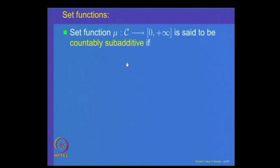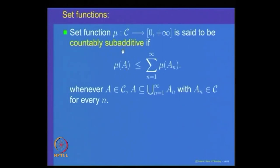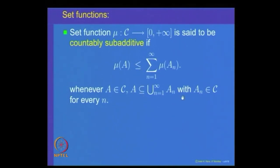There is another notion called countably sub-additive. A set function mu is countably sub-additive if mu(A) ≤ summation from n=1 to infinity of mu(Aₙ), whenever A is a set in C and A is contained in the union of Aₙ's, where each Aₙ is also in C. Here, we are not requiring that the Aₙ's are pairwise disjoint. This is called the countable sub-additivity property of the set function mu.